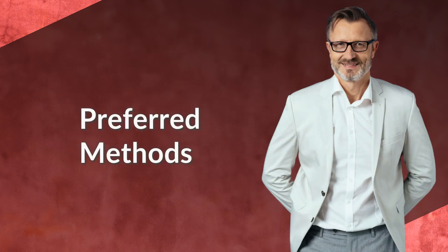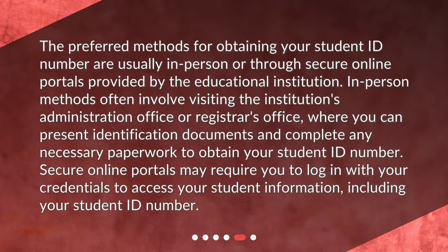The preferred methods for obtaining your student ID number are usually in-person or through secure online portals provided by the educational institution. In-person methods often involve visiting the institution's administration office or registrar's office, where you can present identification documents and complete any necessary paperwork. Secure online portals may require you to log in with your credentials to access your student information, including your student ID number.